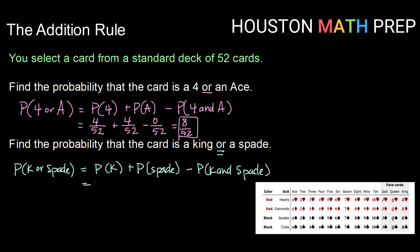How many Kings are there in a deck? There are 4 Kings out of 52 cards. How many Spades are there? Well, there are 13 of each suit, so there are 13 Spades out of 52 cards. Now this last bit, probability of being a King and a Spade.